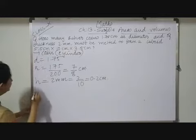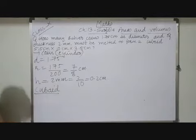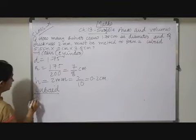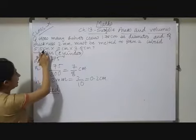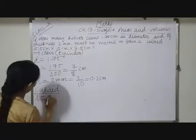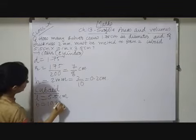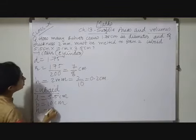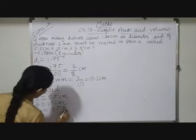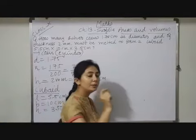Now after that, here it is given must be melted to form a cuboid. So here now the next solid is cuboid - must be melted to form a cuboid. And dimensions also given: first one is length, second breadth, and last one is height. So length given here 5.5 centimeter, breadth given 10 centimeter, and height is 3.5 centimeter.